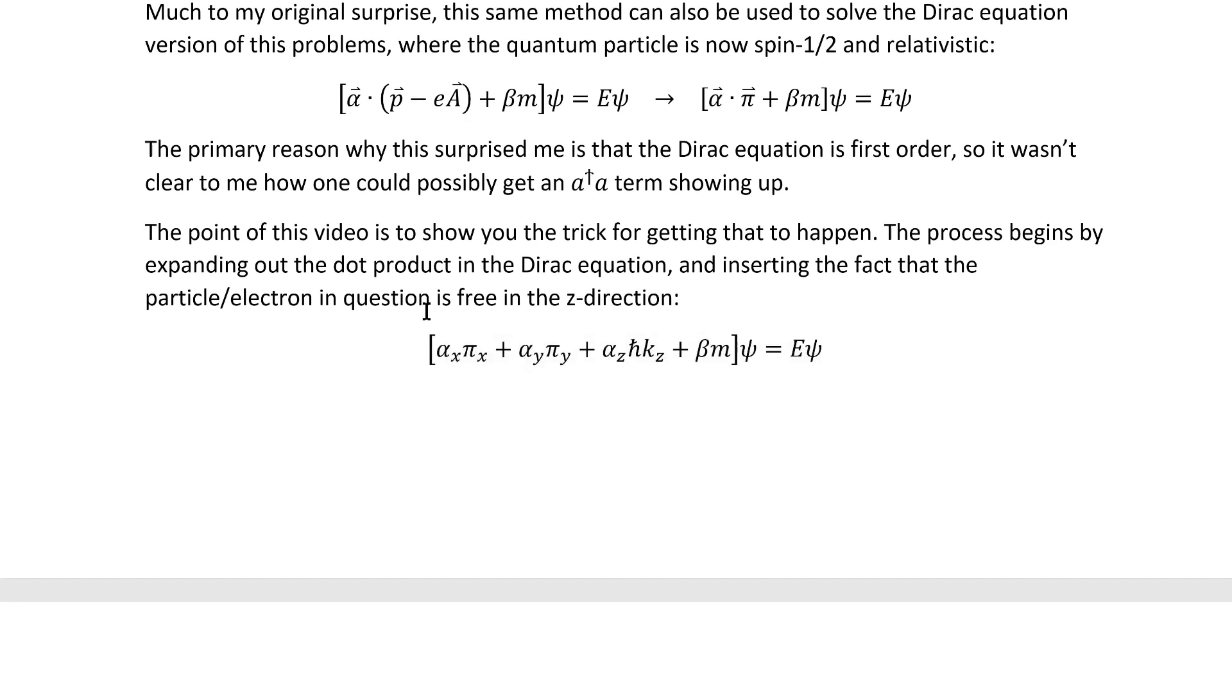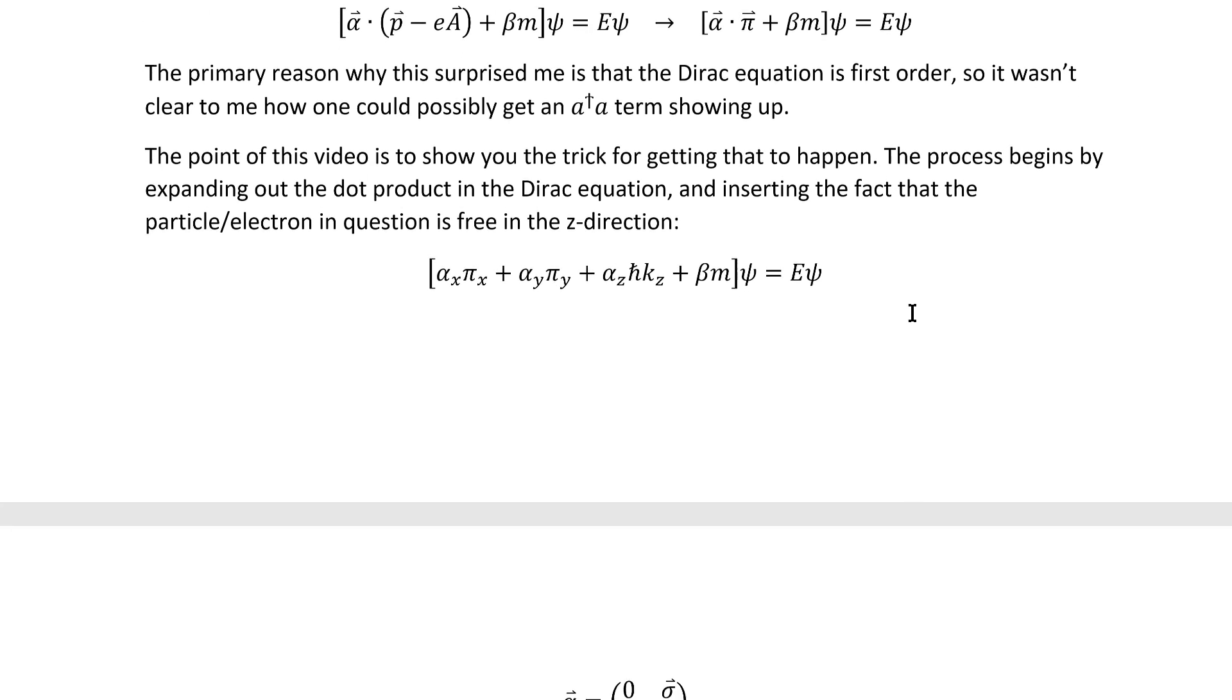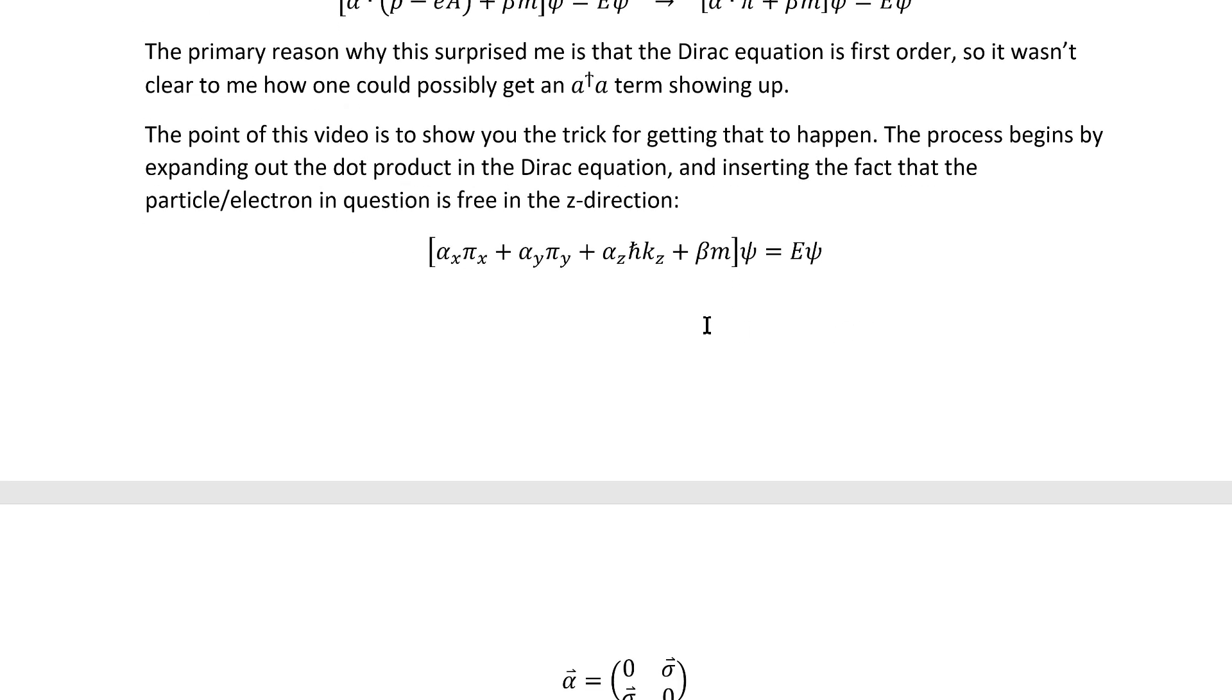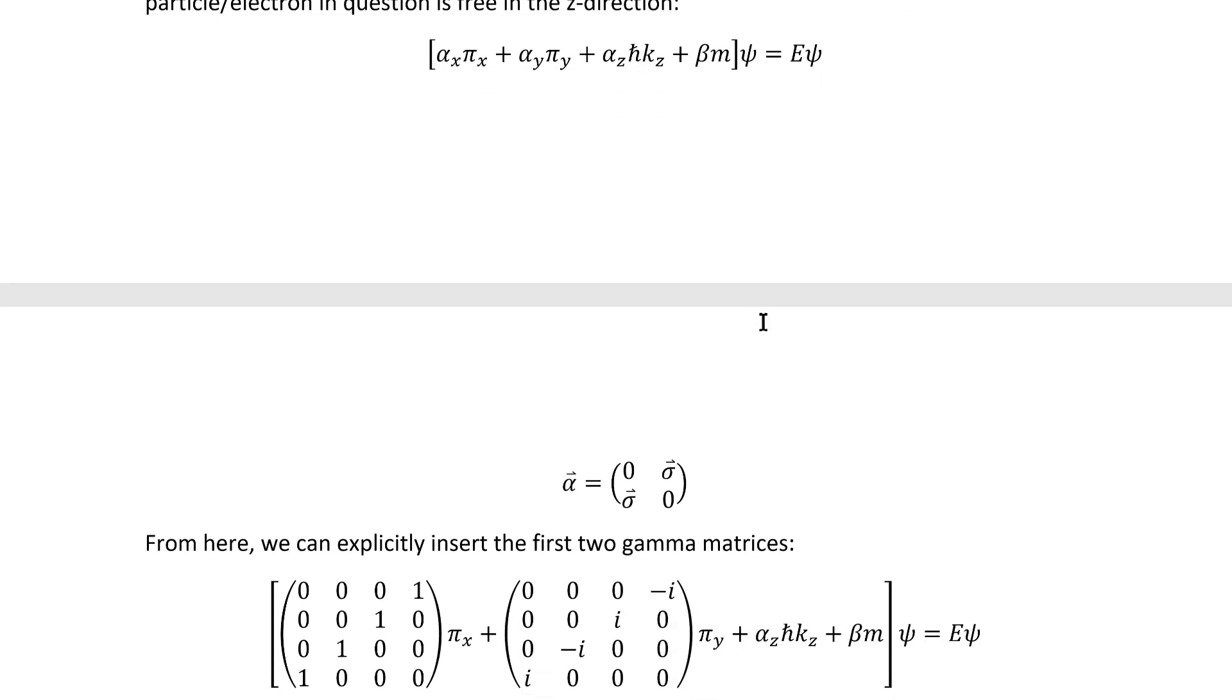The process begins by expanding out the dot product in the Dirac equation and inserting the fact that the electron is free in the z direction. So that gets us here. Now I'm being a bit sloppy with the wave function. Technically I should set psi equal to the z phase that gives us this factor there times another function but we're not doing much explicit wave function work in this video because we're just going for the eigenvalues and so I didn't bother to be too picky about that.